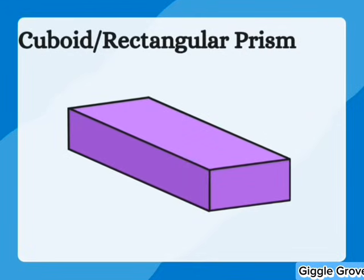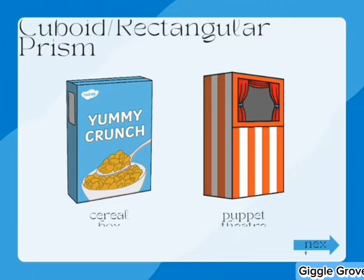A cuboid, also known as a rectangular prism, is a three-dimensional shape with six rectangular faces. Opposite faces are equal in size and all angles are right angles. It has 12 edges and 8 vertices.